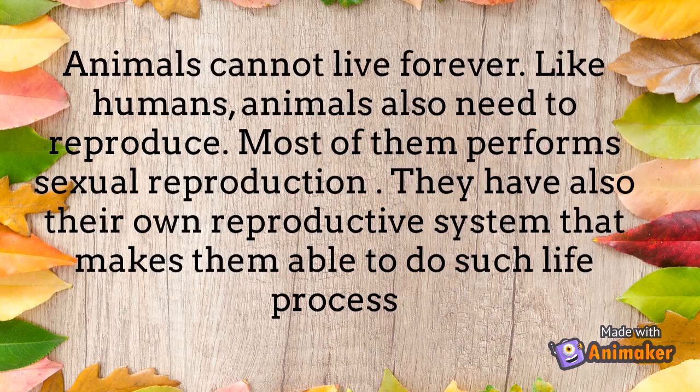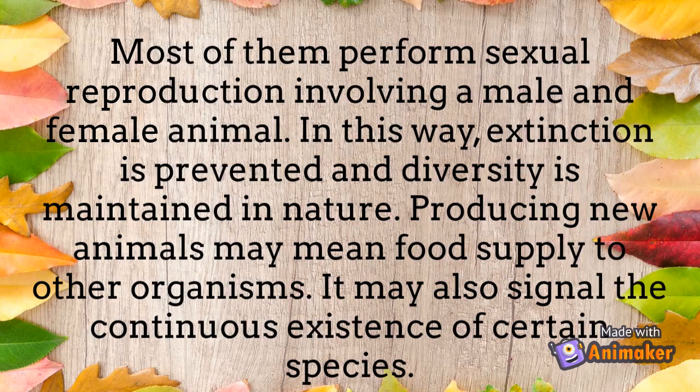Animals cannot live forever. Like humans, animals also need to reproduce. Most of them perform sexual reproduction, involving a male and female animal. They have their own reproductive system that makes them able to carry out this life process. In this way, extinction is prevented and diversity is maintained in nature.